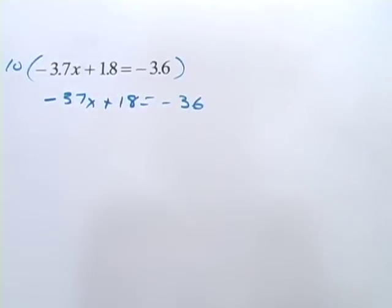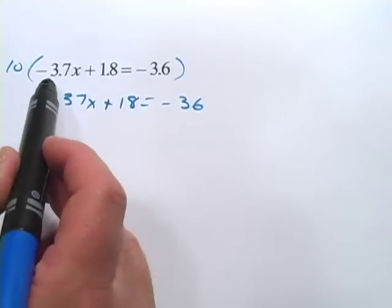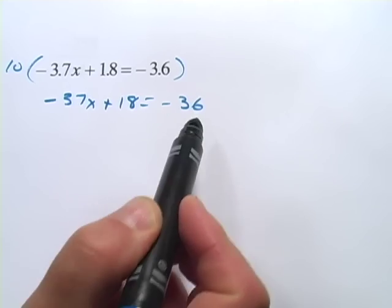Now, we don't have to do it that way. You can just go ahead and subtract 1.8 from each side and then divide by negative 3.7. You'll get the same answer, or you should. But let's go forward and do it this way.